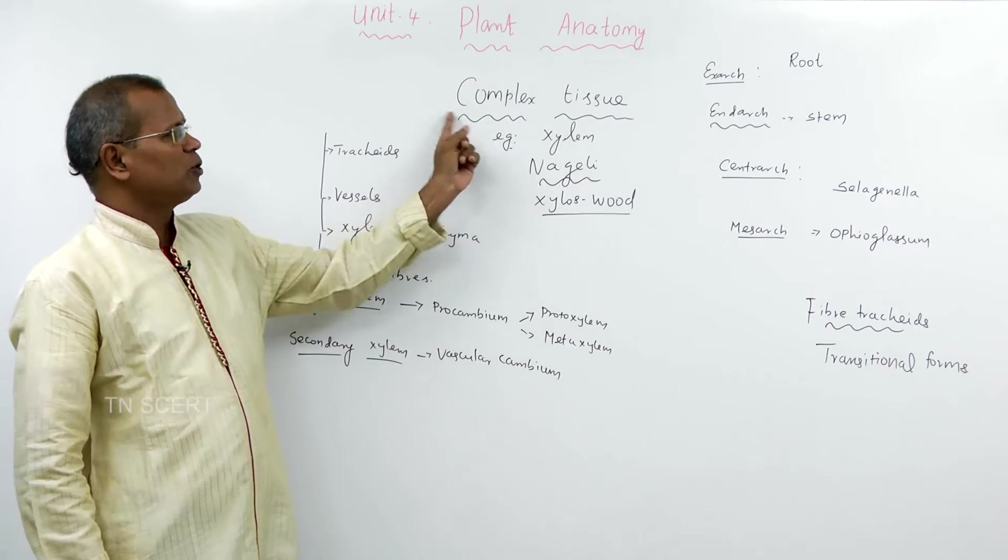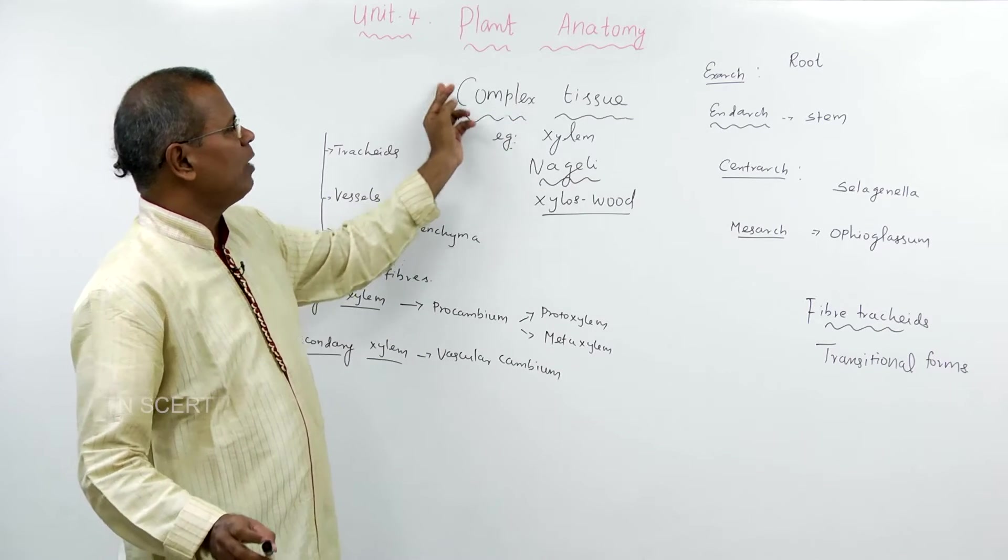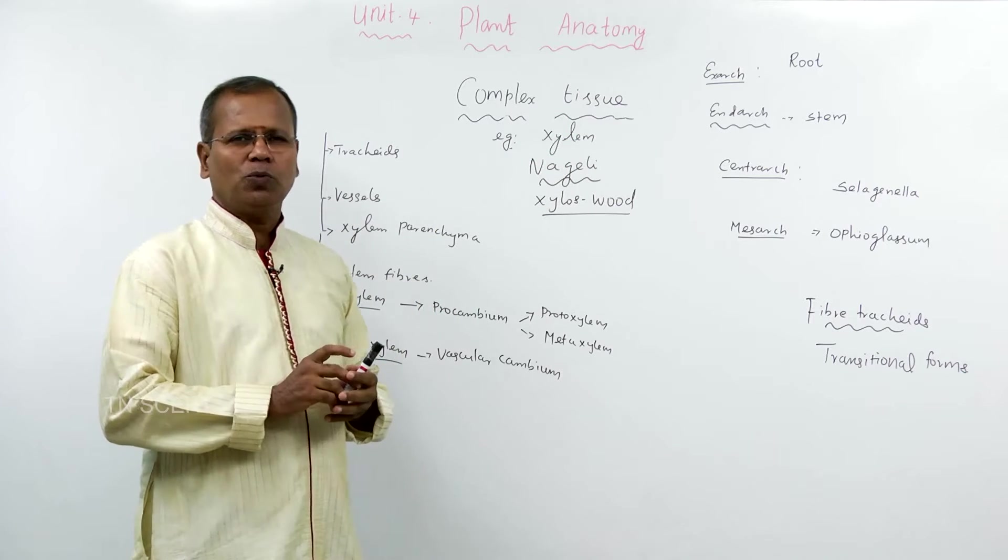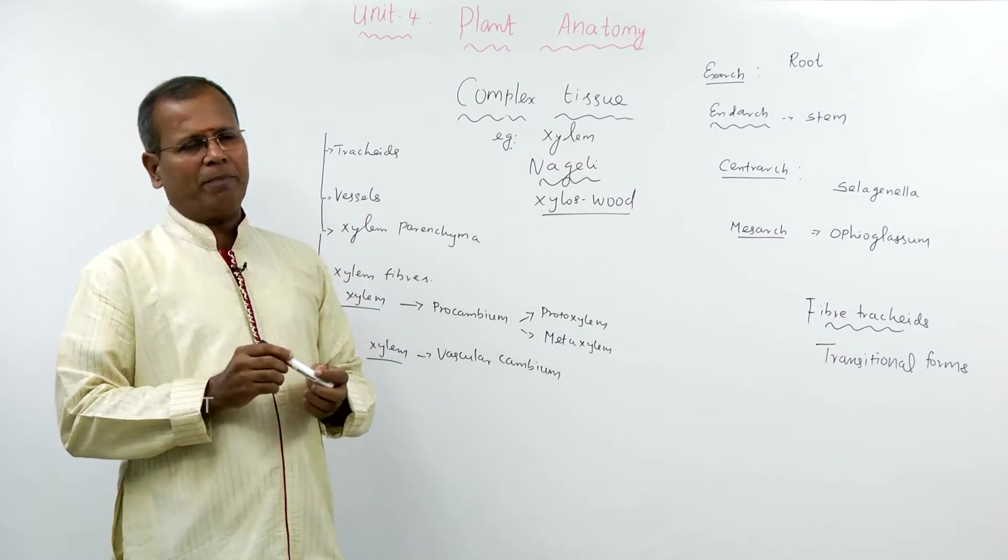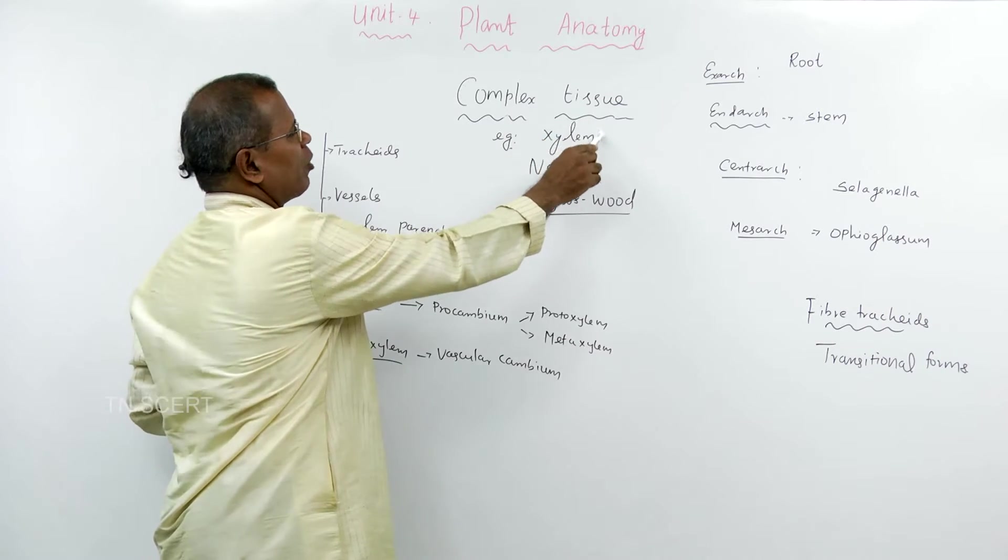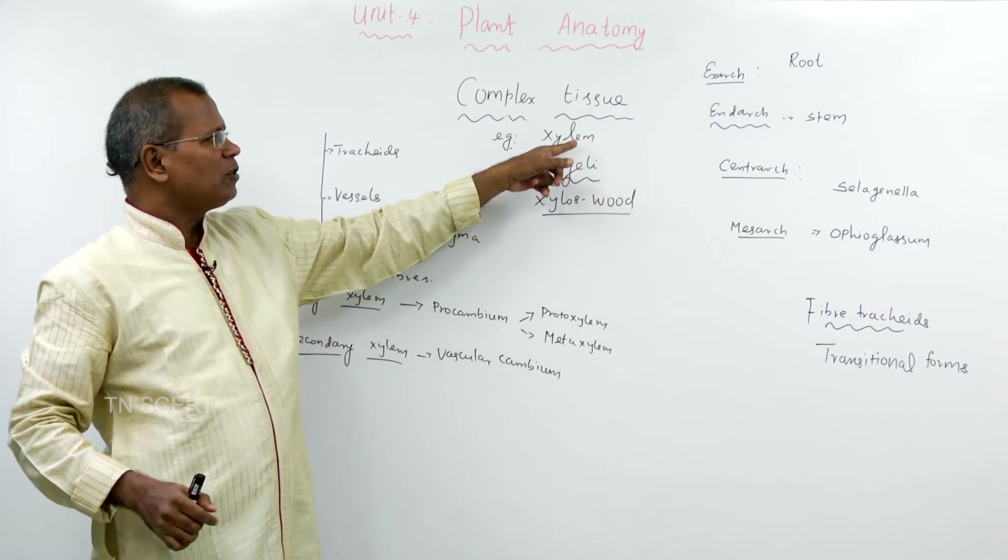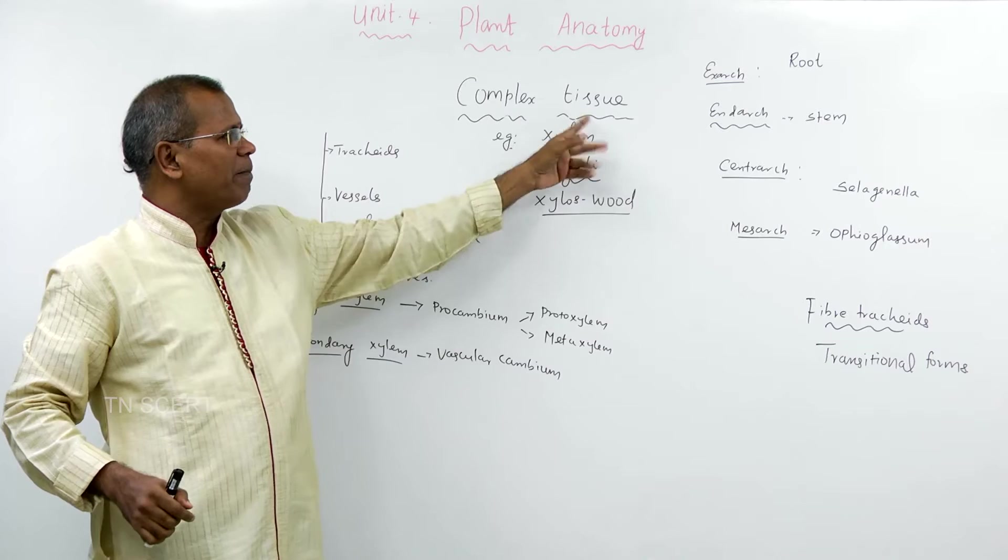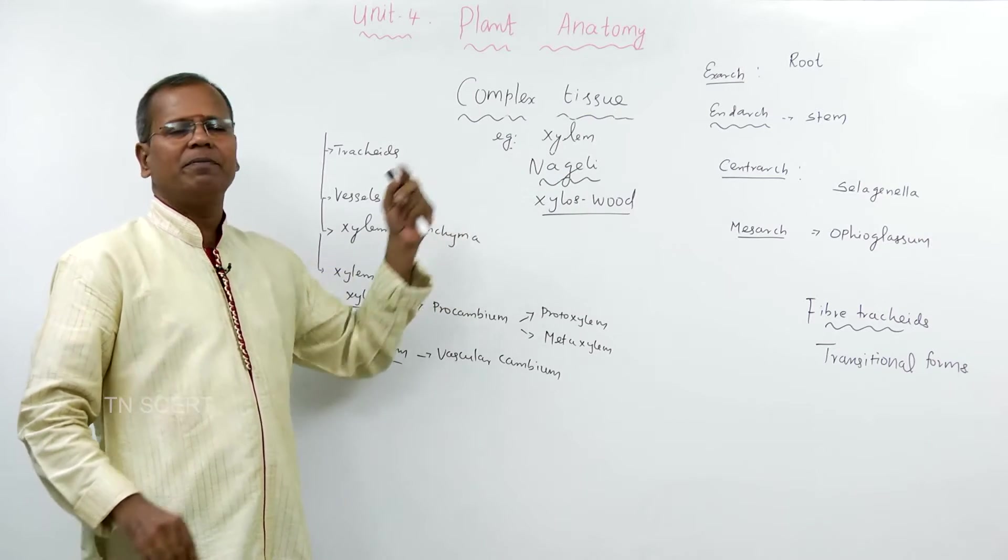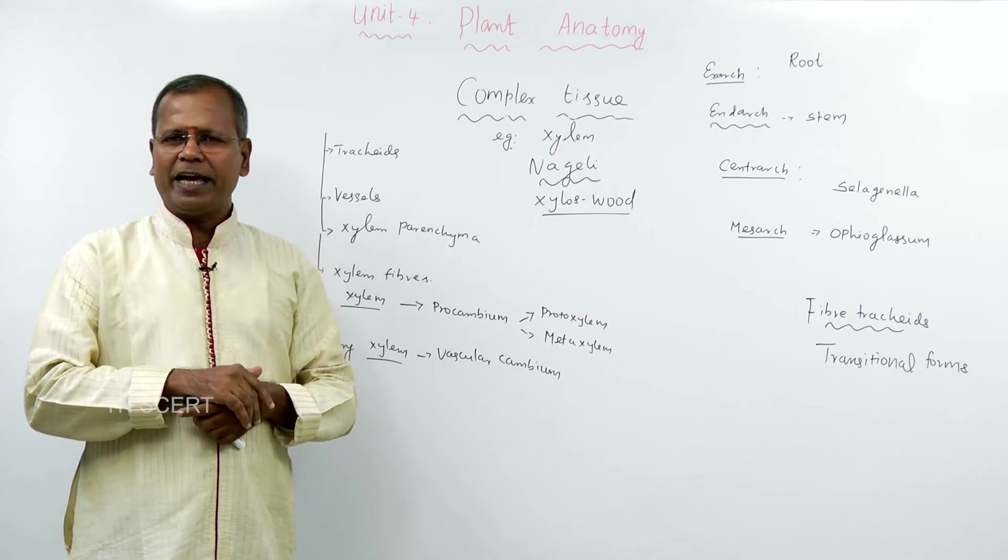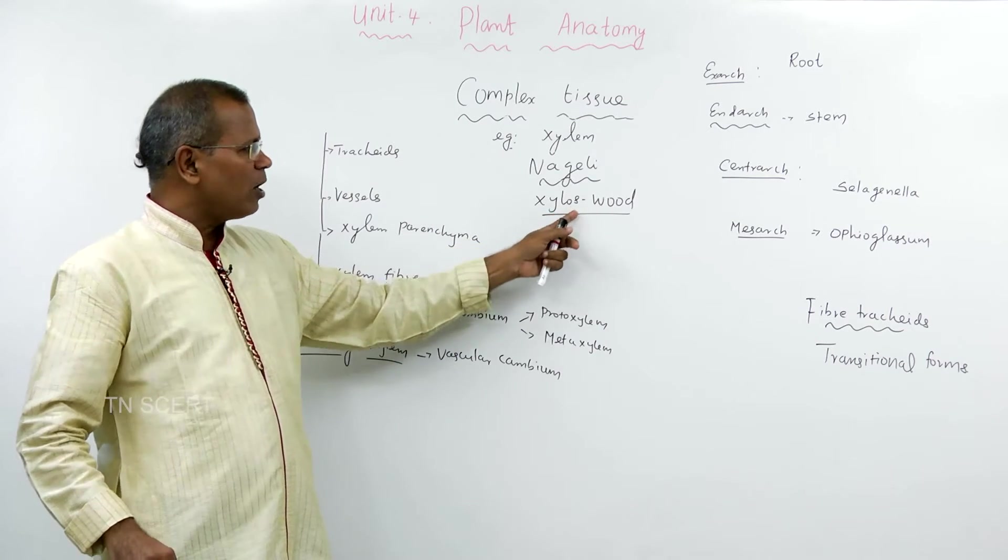And the complex tissue we are going to study the xylem. So if the tissue is made up of more than one type of cell, we are calling it as complex tissue. The xylem and phloem are examples for complex tissue. The term xylem means wood.